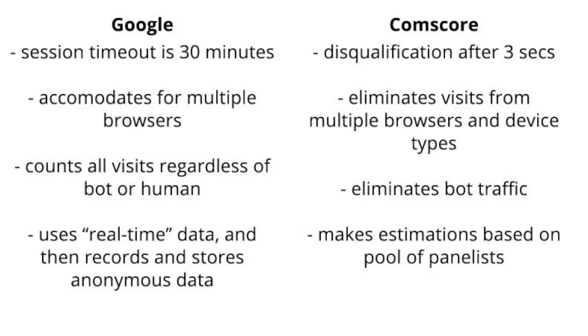For data projection, Google Analytics uses real-time data and then records and stores anonymous data, while Comscore makes estimations based on the pool of panelists that are tracked via plugins or cookies.